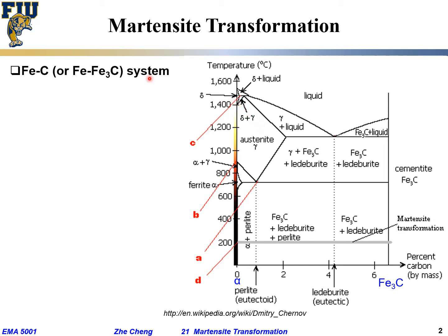Near the pure iron side at close to 1500°C we have the melting point for almost pure iron. There are several single-phase and two-phase regions. The delta phase is the high-temperature BCC iron. Then there is the wide austenite region — FCC iron — labeled gamma. A little lower is the ferrite alpha phase, which is BCC iron, and on the other side is cementite.